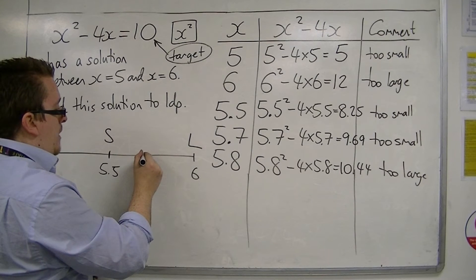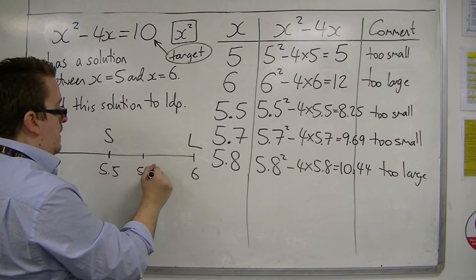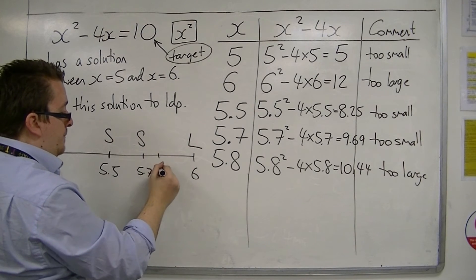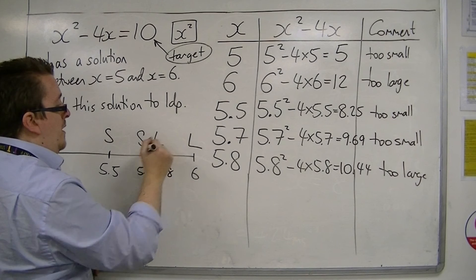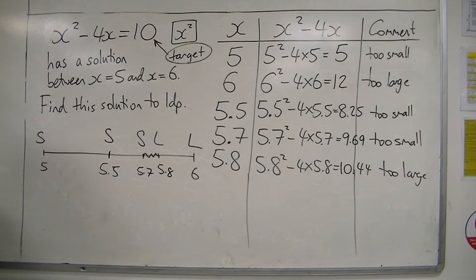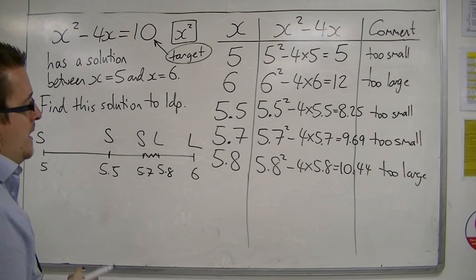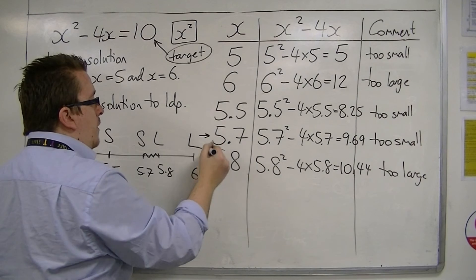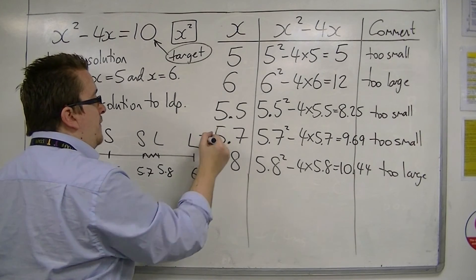Then I tried 5.7, so 5.7 was about there. That was too small. And 5.8 was too large. So I know the solution is somewhere between those two values, between 5.7 and 5.8. But because I only want the solution to one decimal place, the solution that I give at the end will either be 5.7 or 5.8.